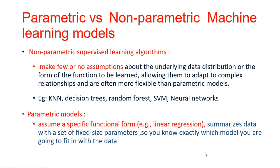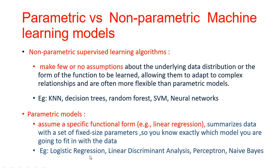In parametric models, it assumes that there is a specific functional form, a specific distribution in the data. This model assumes a kind of distribution you have in the data — it assumes the data is linear, the data is Gaussian — and therefore based upon that it will summarize the data based upon a set of fixed parameters. Since the distribution is known, it will summarize the data in the form of a fixed size of parameters, so you know exactly how your model is going to fit into the data. Whereas in non-parametric you do not know, so the model has no idea about the data distribution and hence is more suitable for complex relationships and much more flexible. Examples of parametric models are logistic regression, LDA (linear discriminant analysis), perceptron, and Naive Bayes.